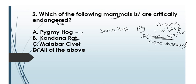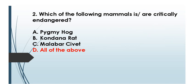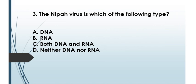In 2018, less than 200 pygmy hogs were identified in Assam's Barnadi Wildlife Sanctuary, also present in southern Bhutan and Nepal. The kondana rat is the smallest rat, found in Maharashtra. The malabar civet is generally found in Kerala and Travancore. All three species are critically endangered — getting lesser day by day. Answer: option D, all of the above.